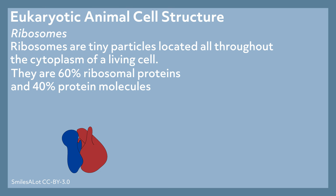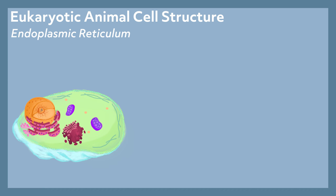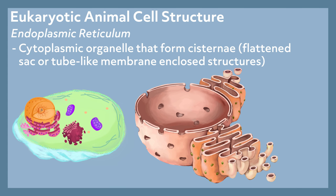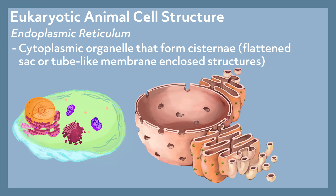Ribosomes are tiny particles located throughout the cytoplasm of a living cell. They are made up of 60% ribosomal RNA and 40% protein molecules, and have two subunits: the large subunit and the small subunit. The endoplasmic reticulum, or ER, is a cytoplasmic organelle that forms cisternae — flattened sac or tube-like membrane enclosed structures — and is attached to the nuclear envelope. There are two types of ER: rough ER, which looks like sheets of rugged membranes due to ribosomes attached to the outside, and smooth ER, which looks like slick tubes and has no ribosomes. Most cells contain ER, except for red blood cells and sperm cells, and the size of the ER varies based on the function of that cell.